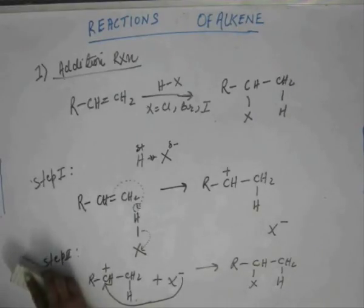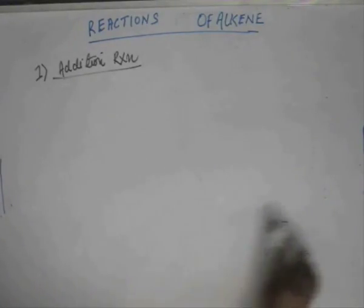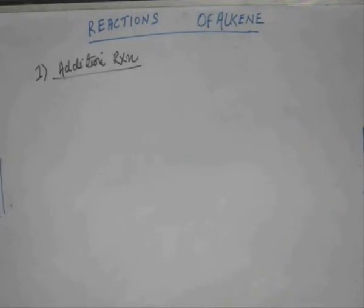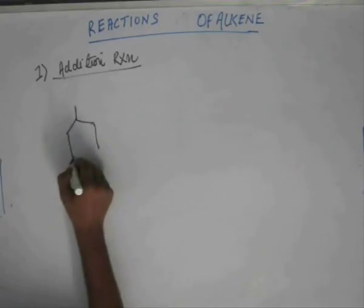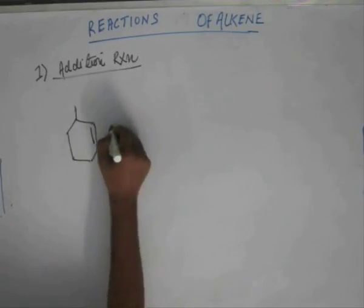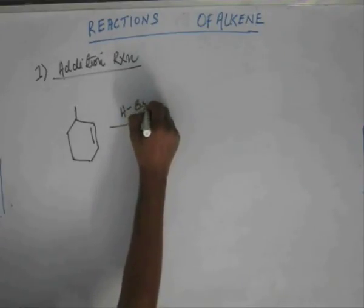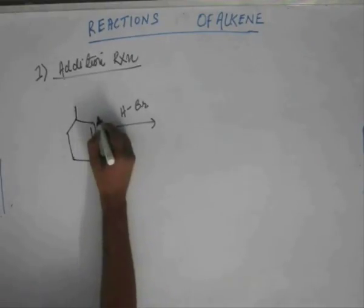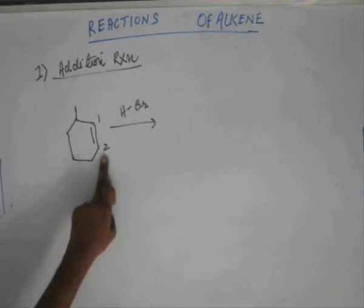Let's solve some problems on this. The question is: give the addition product. In the first step, hydrogen will be added on C1 or C2. If hydrogen gets added on C1, a plus charge will be generated on C2. If hydrogen is added on C2, plus charge will be produced on C1.